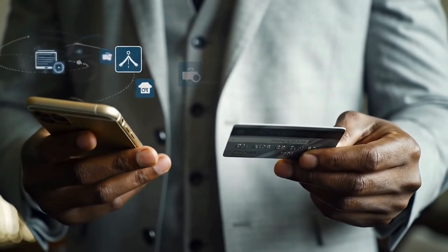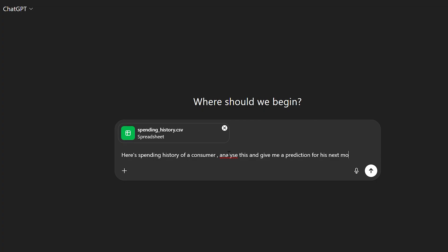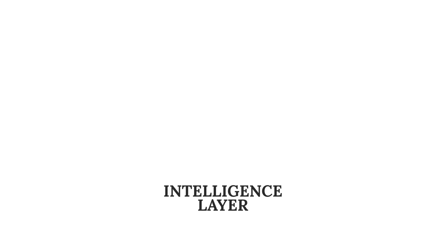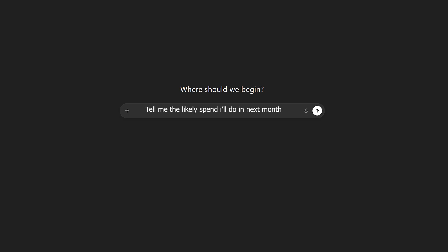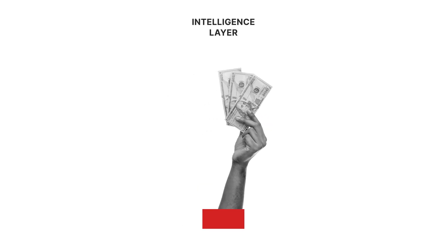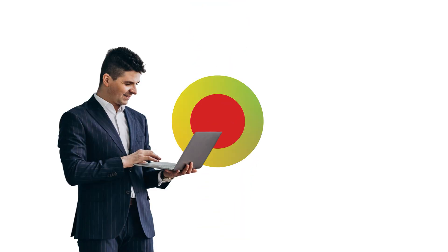Earlier, products which were 'plus AI' used AI as part of a workflow to help customers achieve a certain thing — for example, aggregating transactions or predicting the purchase cycle of a person in the next month. But AI-first products do it very differently. They create the first interaction at the intelligence layer, so you can just ask: 'Tell me the likely spend I will do in the next one month,' and the intelligence layer automatically aggregates your transaction records and gives you the answer. So the intelligence is making decisions for you.